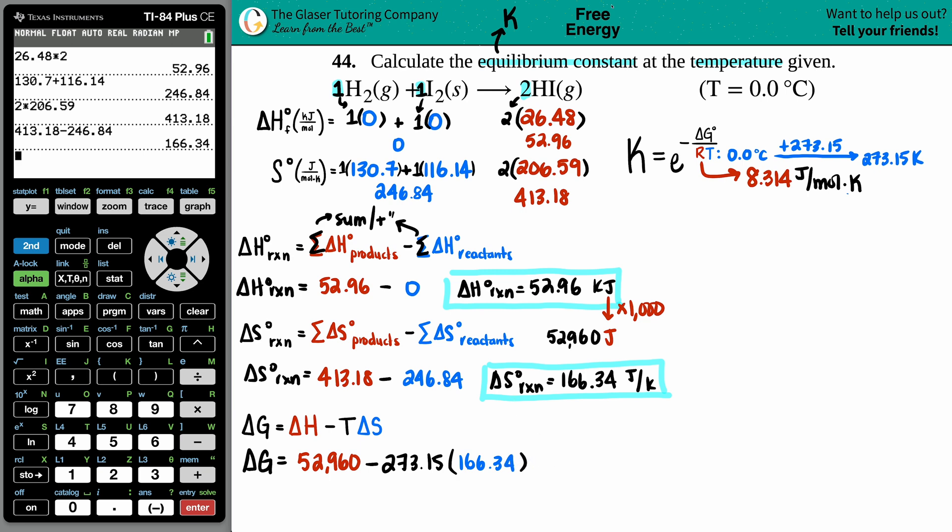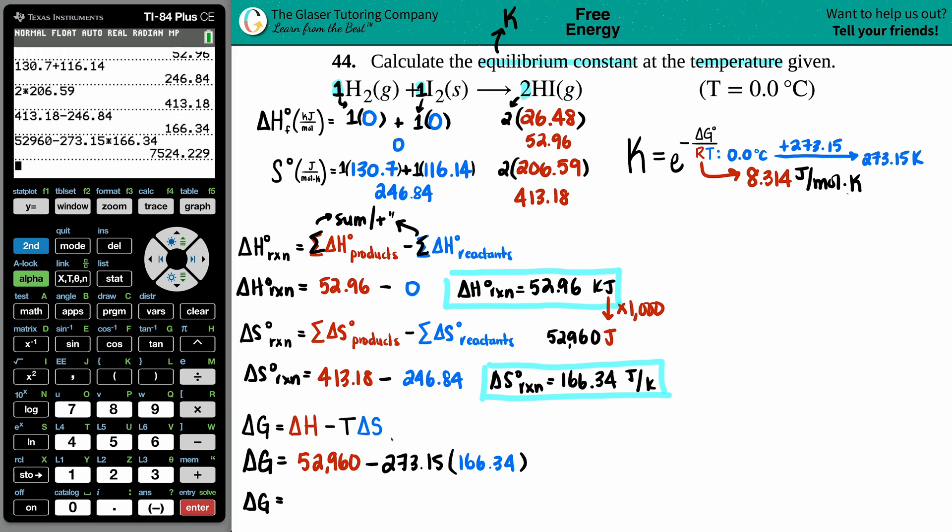Delta G equals 52,960 minus my temperature in kelvin, 273.15, and then times by the S value, which was 166.34. I could plug this all into the calculator at once. Seems like this is non-spontaneous - it's a positive delta G: 7,524.229 joules.